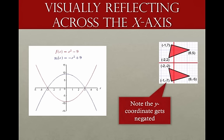Here are a few pictures. Starting with the triangles: take the point (−1, 7). To reflect that across the x-axis, change the sign of the y, and you get the point (−1, −7). Similarly, over here we have our original function f, which is our parabola shifted down nine spots. If I put a negative out in front, that makes x² negative and changes the sign of the 9, and you can see I've reflected that original function over the x-axis.